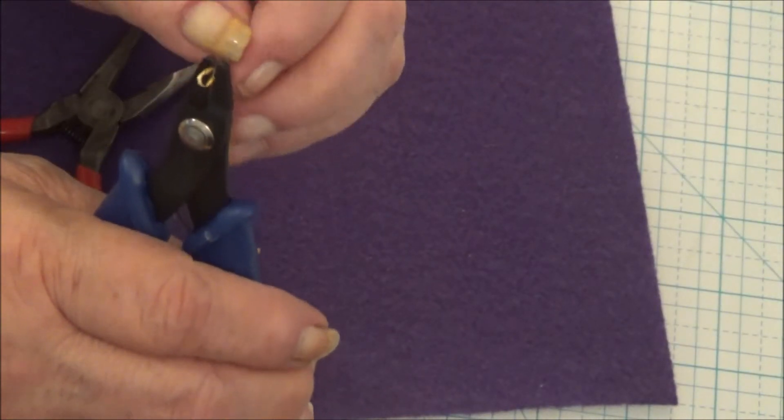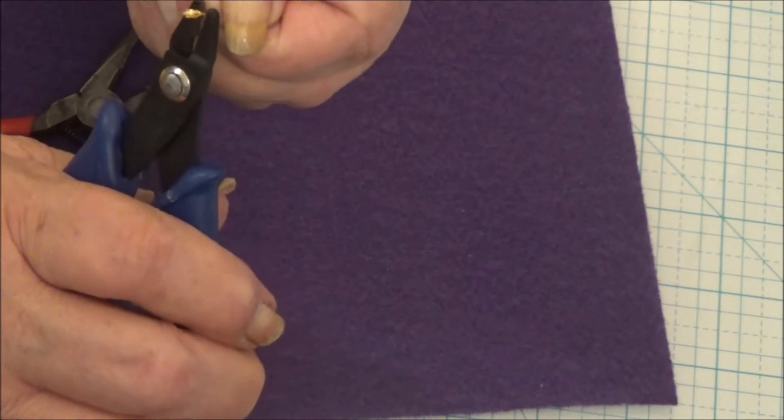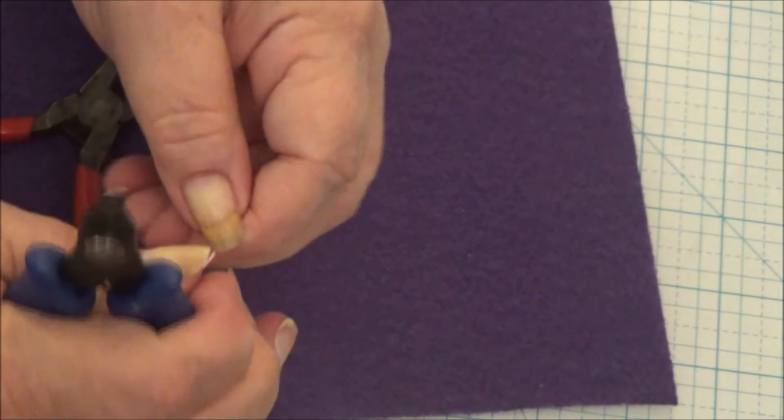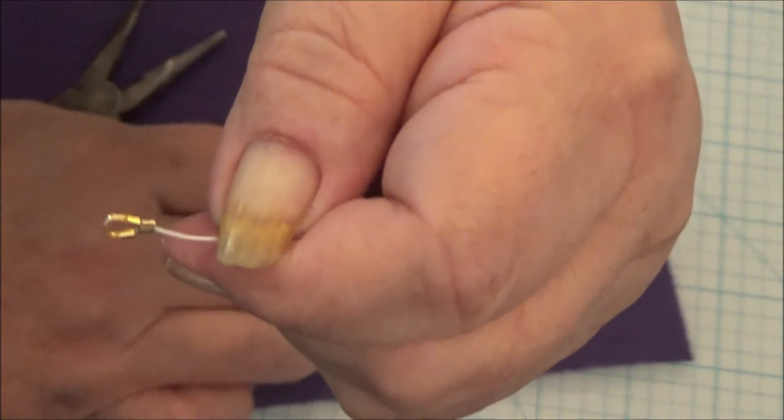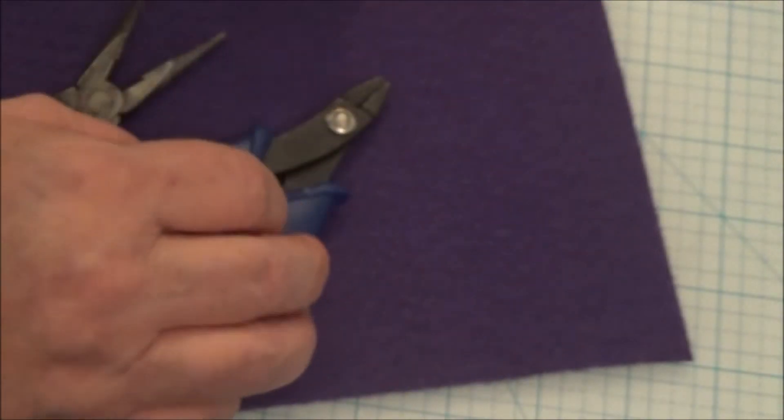Now I'm going to fold it back up on top of itself with a smaller part of the crimp bead tool. And crimp it again. And it folds back over itself and makes your crimp bead smaller.